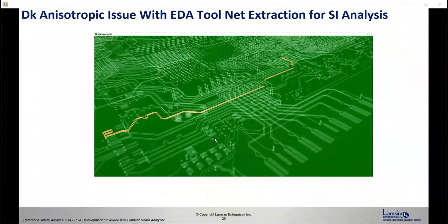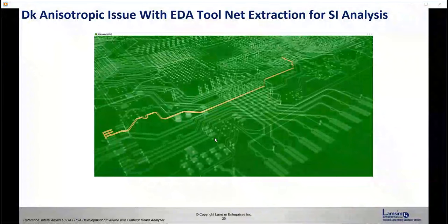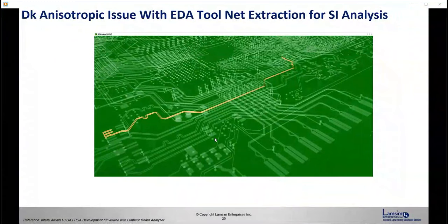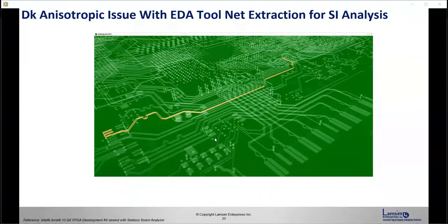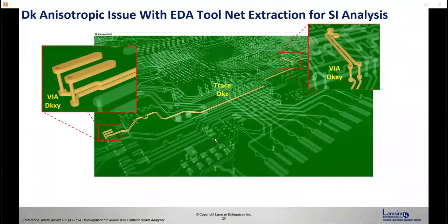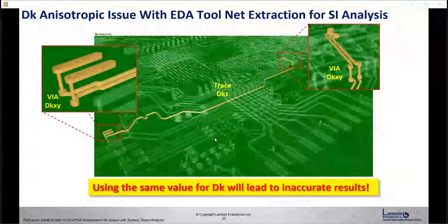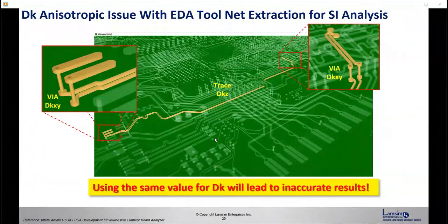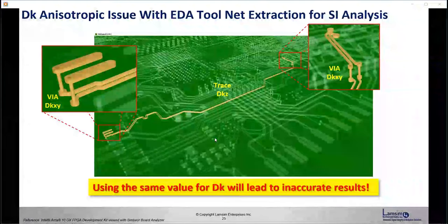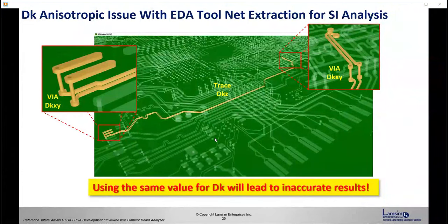Another issue I want to highlight is the problem with EDA tools and net extraction for signal integrity analysis. Many tools are now promoting 'shift left' — suggesting you can move the signal integrity process earlier and just push a button to get a result. But in reality, as we've seen, we need two different DKs. In your design, there's only one DK specified in the stack-up in these design tools, so you can't use just one value.